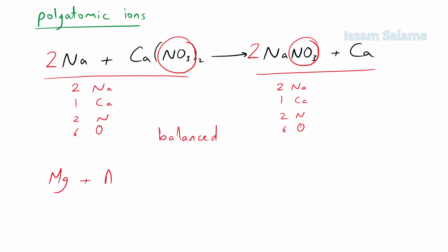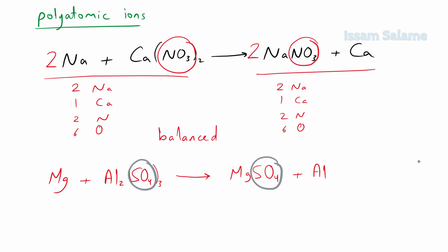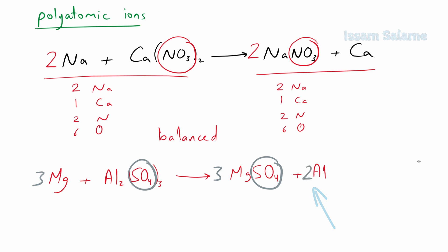Another polyatomic ion example: the reaction of magnesium with aluminum sulfate to give magnesium sulfate and aluminum. Sulfate is the polyatomic ion, treated as a unit. We have 3 units on the left and only 1 on the right, so multiply magnesium sulfate by 3. Then balance the magnesium atoms on the left by multiplying by 3. Finally, balance the aluminum atoms on the right by multiplying by 2, and the equation is balanced.